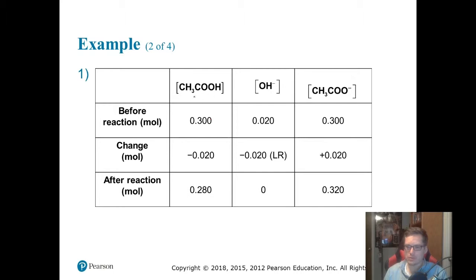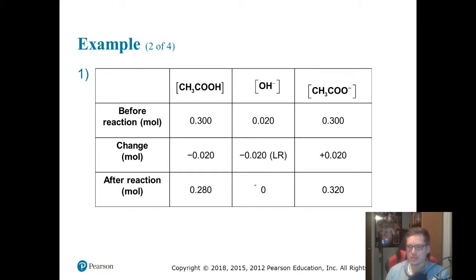We started with 0.300 moles of acetic acid, 0.020 moles of sodium hydroxide that we added, and 0.300 moles of acetate ion. When this reacts, all of the hydroxide is going to be used up — it reacts with our acetic acid, because the base reacts with the acid. The NaOH is the limiting reactant, so acetic acid goes down, and for every mole that reacts, one mole of acetate is formed. Once the reaction is complete, we have zero hydroxide left, 0.280 moles of acetic acid, and 0.320 moles of acetate.